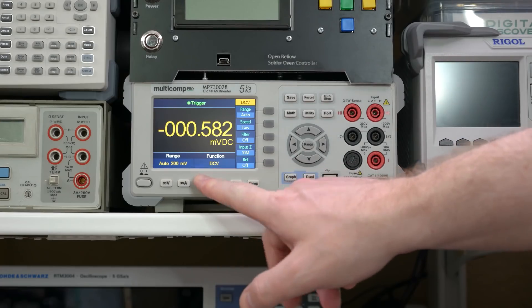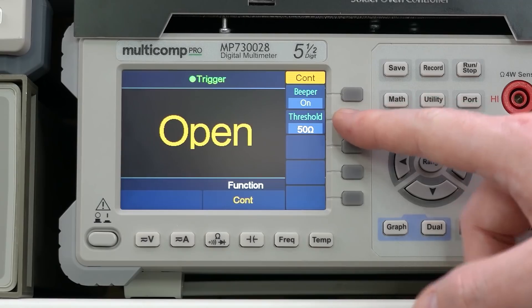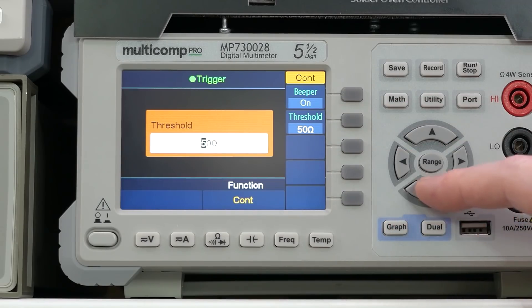For example, on my bench meter, you can define what resistance you want the meter to treat as a short. Now, there are at least two reasons that meters have this separate function.